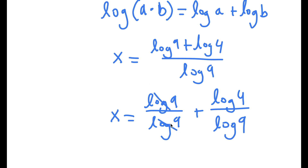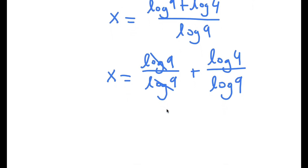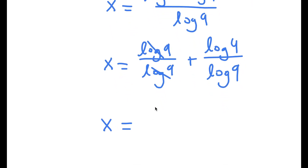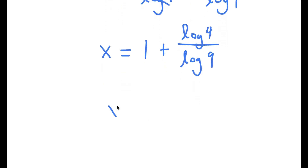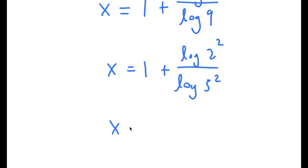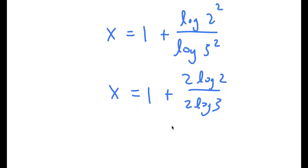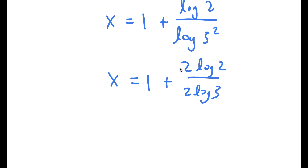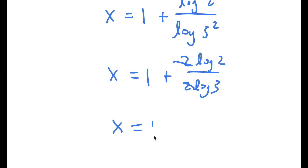Log 9 over log 9 — these two obviously cancel out. So now I get x is equal to 1 plus log 4 over log 9. And log 9, I can rewrite as log of 3 squared. So now this is the same thing as 2 times log 2 over 2 times log 3, and the 2s can simply cancel out, so I'm left with x is equal to 1 plus log 2 over log 3.